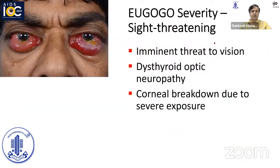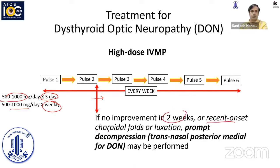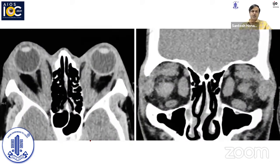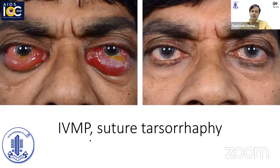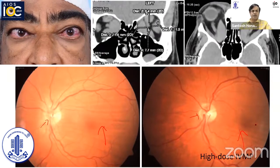In patients with EUGOGO severity sight-threatening disease — imminent threat to vision or dysthyroid optic neuropathy — there is a high-dose protocol where you begin with 500 to 1,000 mg every day for three days, followed by a weekly injection of the same dose. At the end of two weeks, you decide if the patient is responding. If there is no improvement in two weeks, or if there are recent-onset choroidal folds or proptosis not responding to conservative treatment, then prompt decompression is advocated. A patient who came with dysthyroid optic neuropathy and severe chemosis responded quite dramatically following two weeks of treatment, but in patients with persistent choroidal folds, there is an argument for early orbital decompression.